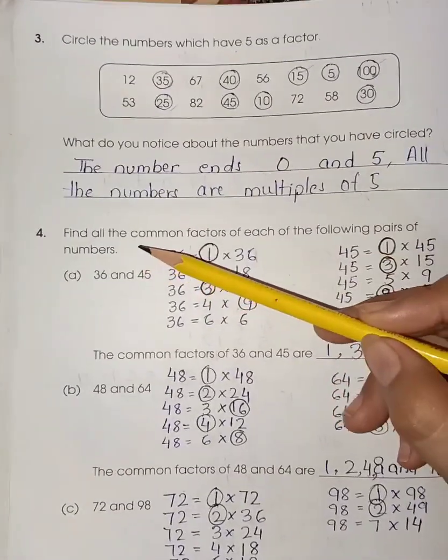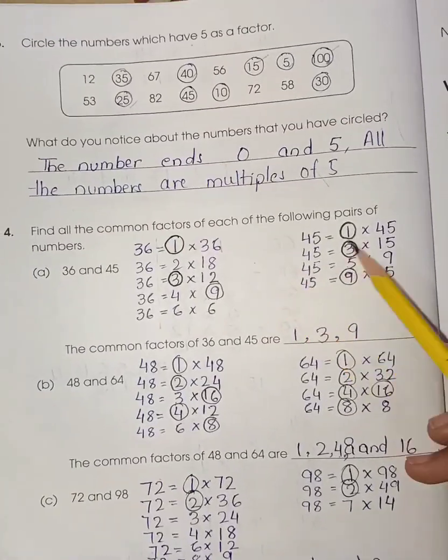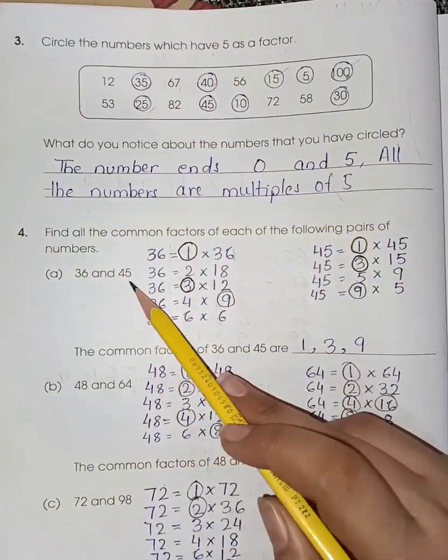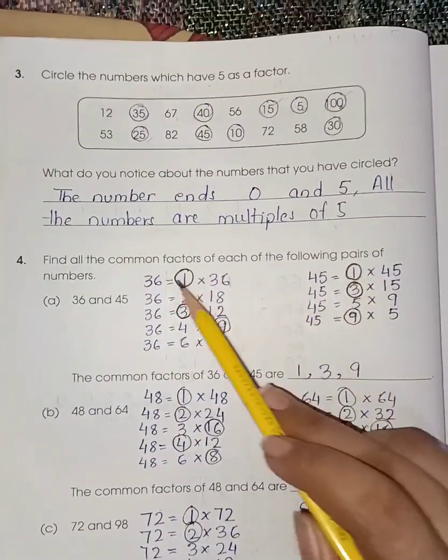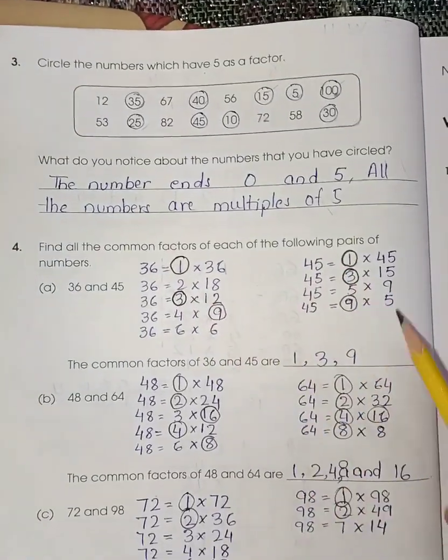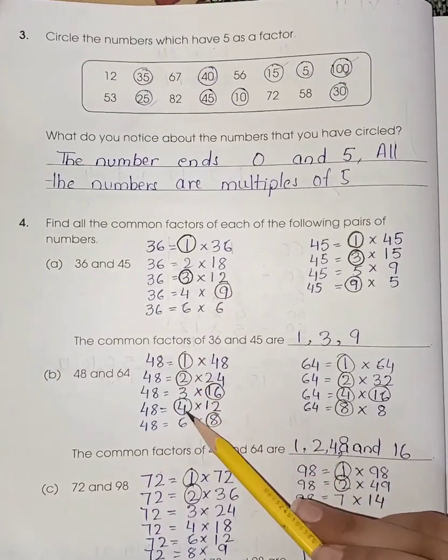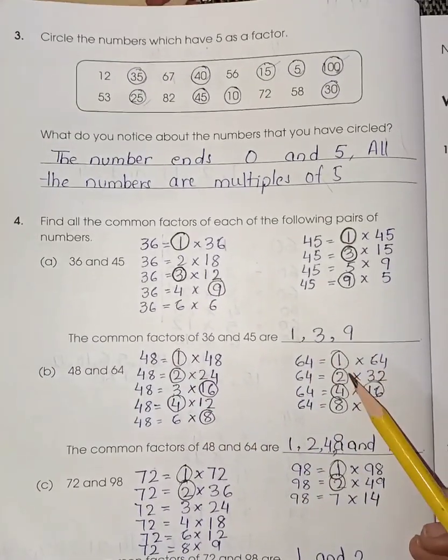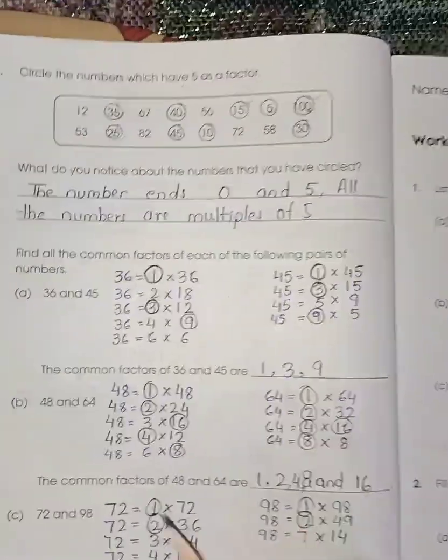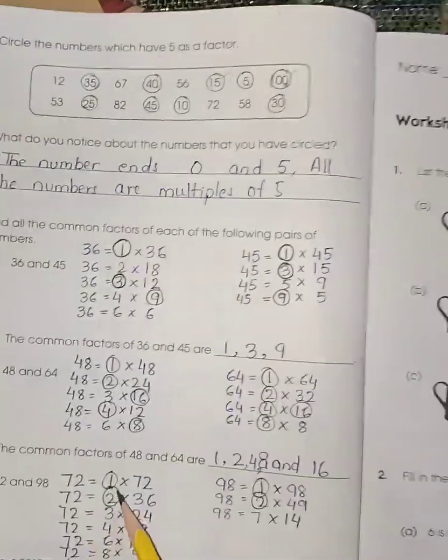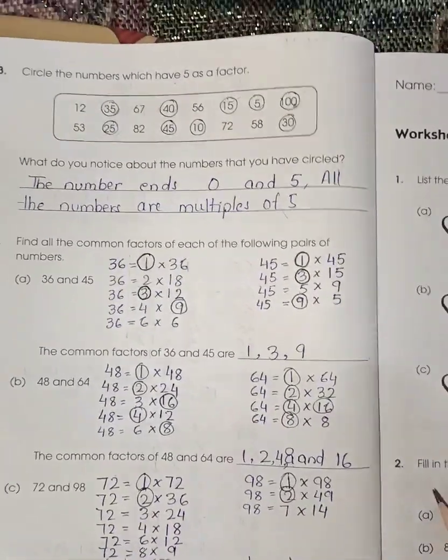Now you have to find the common factor. Common factor means the number which is common in both the numbers, 36 and 45. So you have to make the factor, then you have to find the common. 1, 3, 9 is common. In 48 and 64 we have 1, 2, 4, 8, 16. These are the common numbers. And in 72 and 98 we have 1, 2. So 1 and 2 are the common factors.